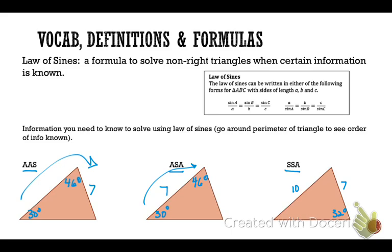Now look on your note sheet just below at the law of sines graphic. You can see the law of sines given here — it's a very versatile formula. Basically, it is the ratio of the sine of the angle compared to its side length. You can use whatever two parts of the formula that you need to solve.